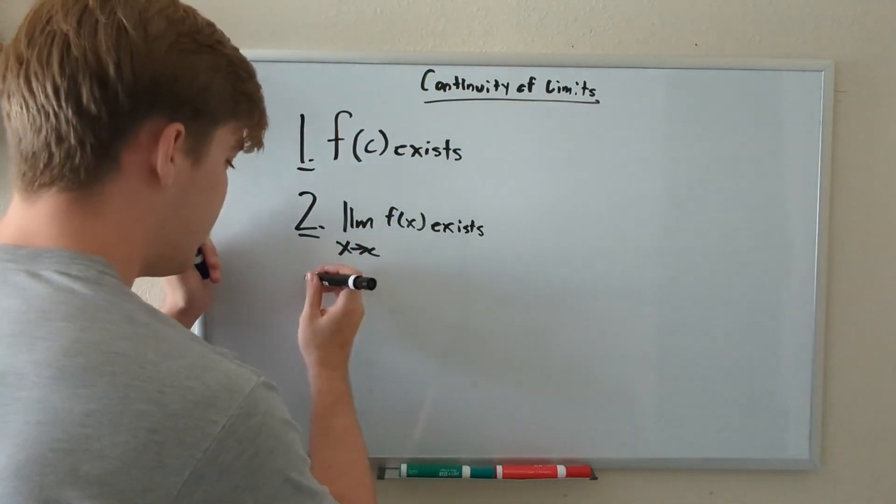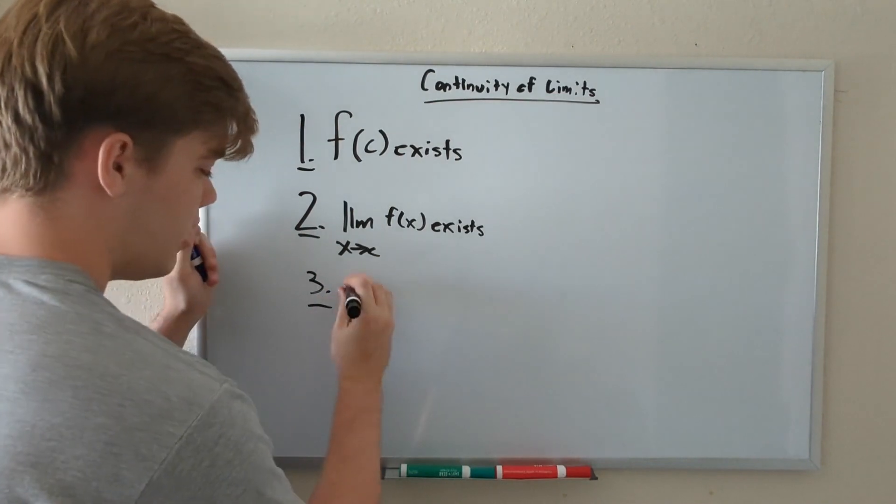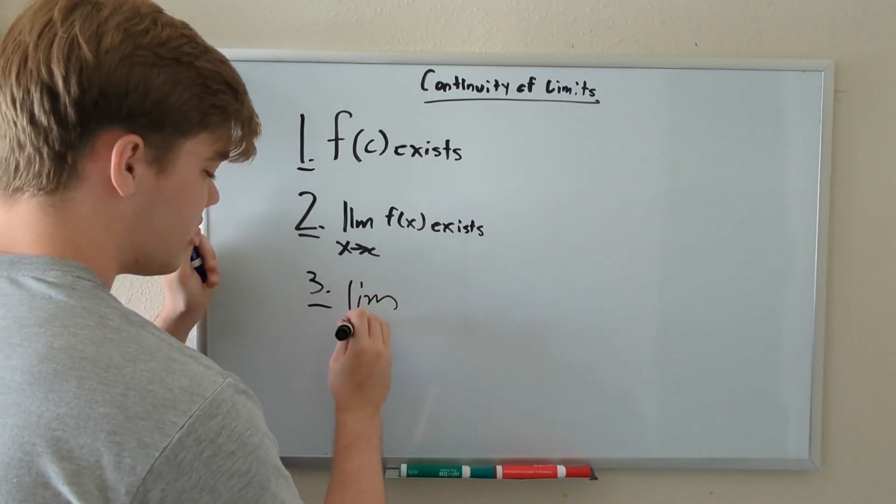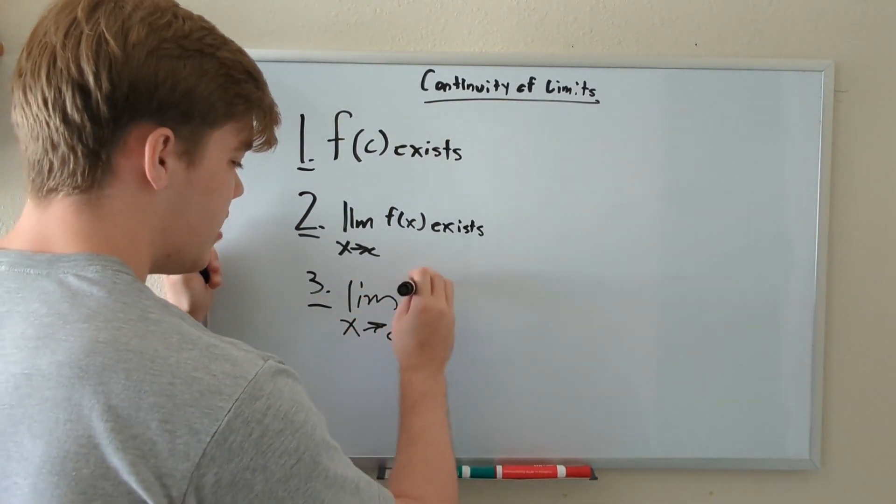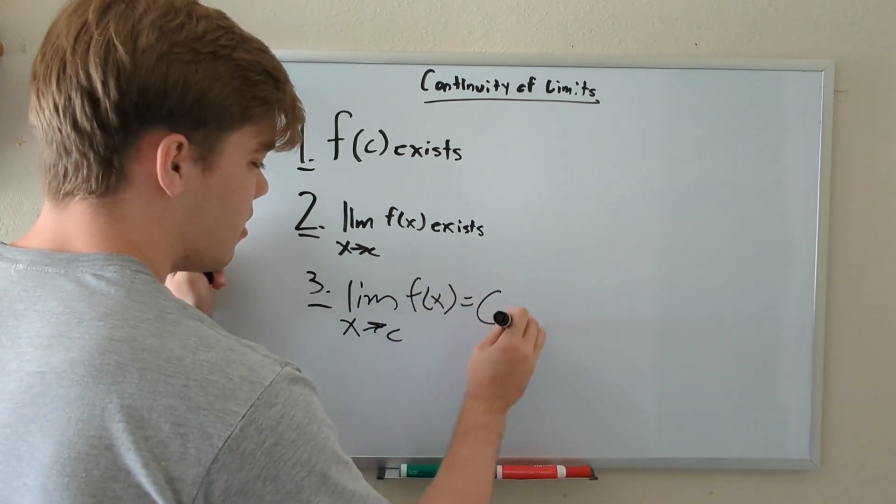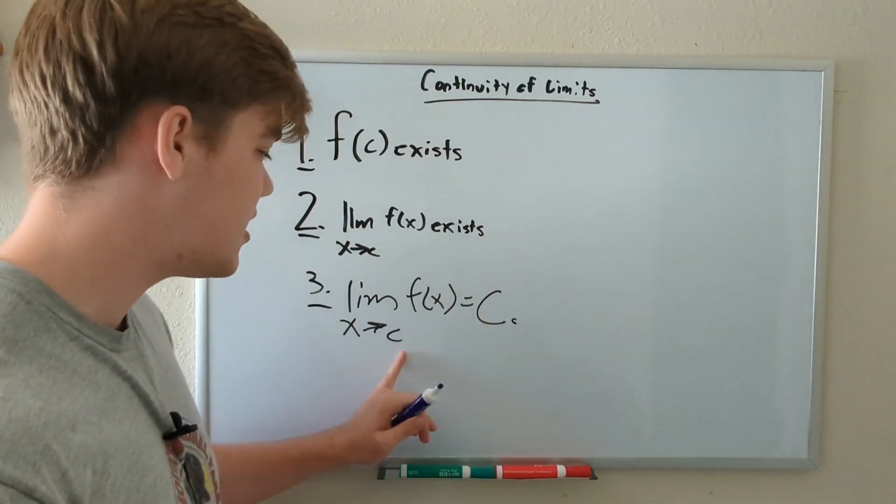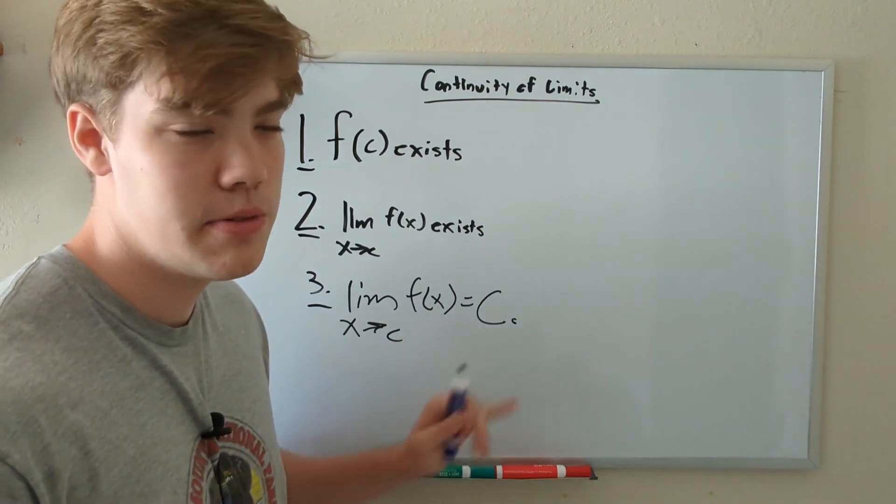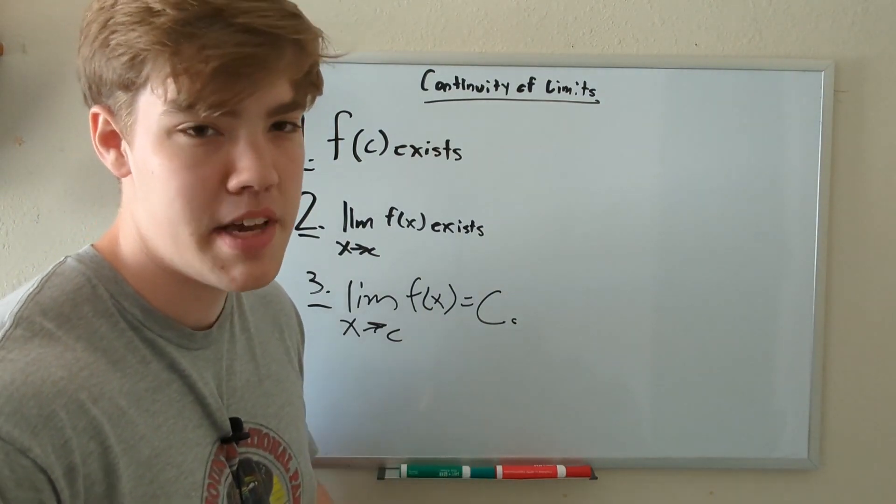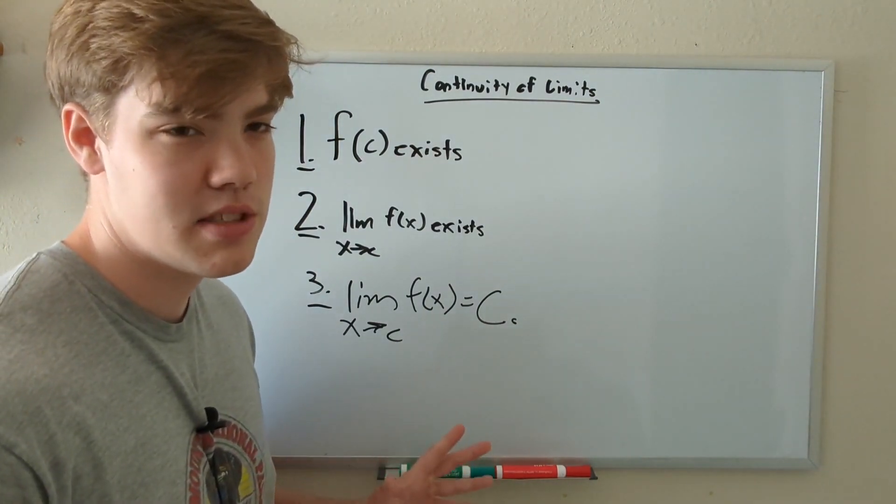And rule number three, rule number three down here: the limit as X approaches C of F of X has to equal C. In other words, whatever we think this limit is going to be for a function has to exist and equal what we think it's going to be. This last rule will make a little bit more sense when we do some examples.